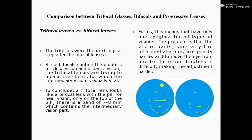See the diagram. This is the bifocal lens and this is the trifocal lens. Both lens designs are almost the same. The only difference is that in trifocal lenses there is this intermediate part, which is only 7 to 8 mm.